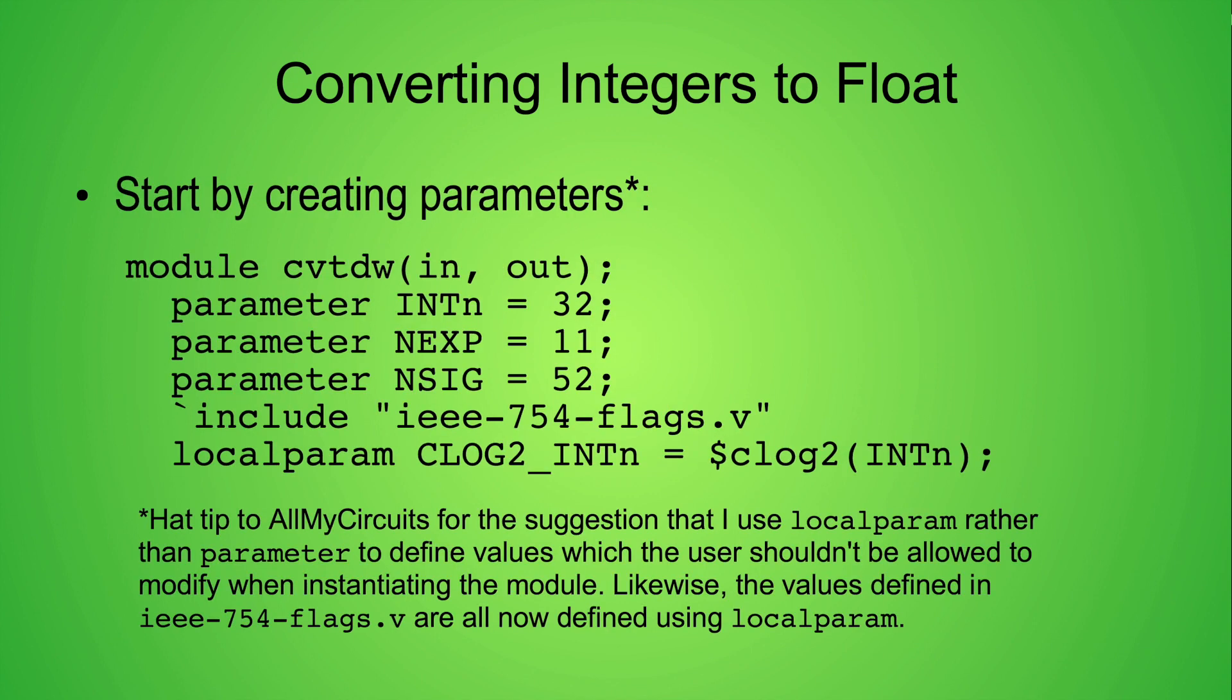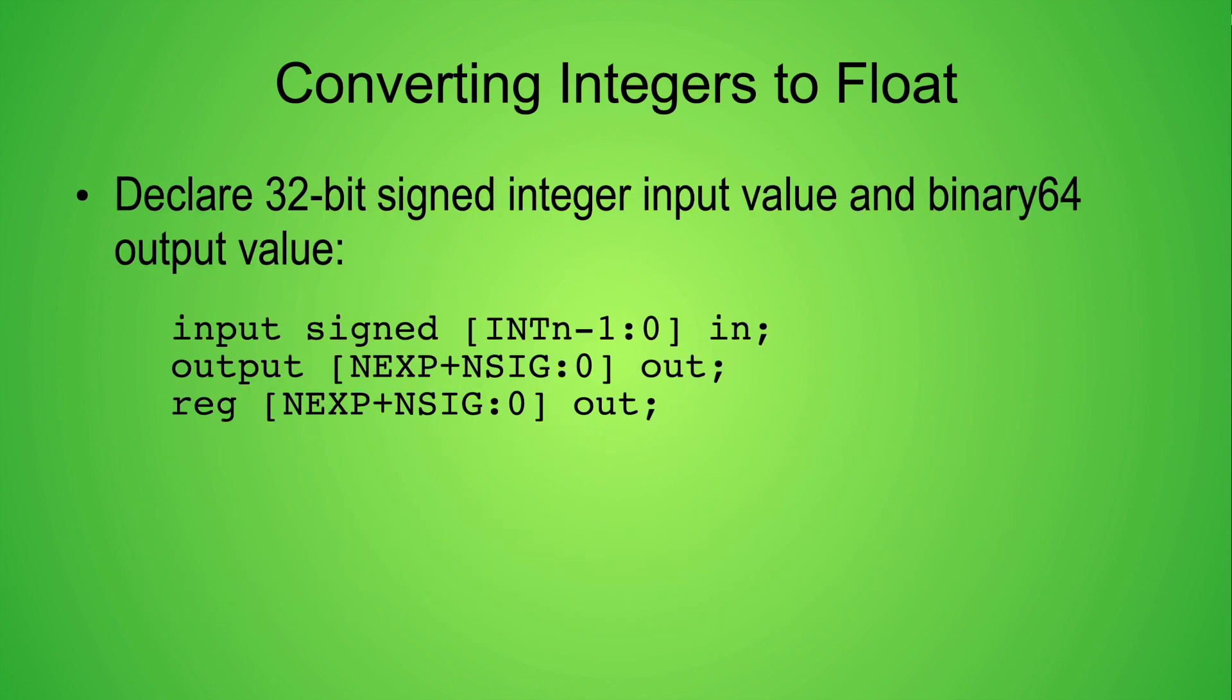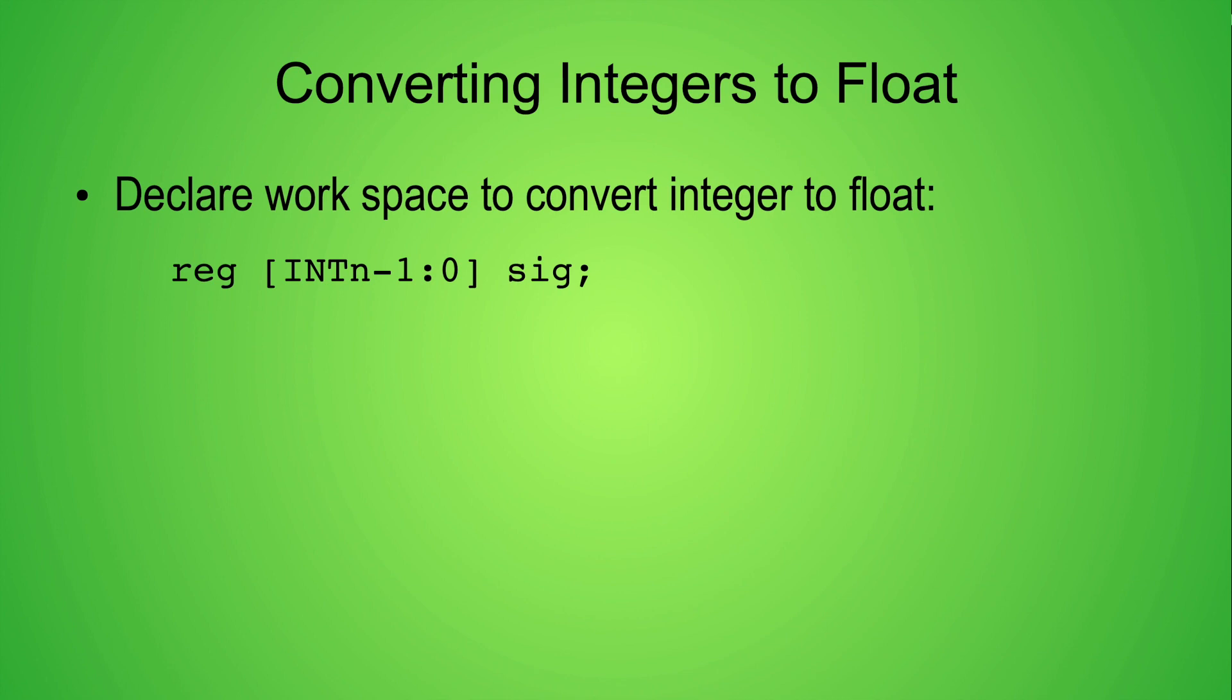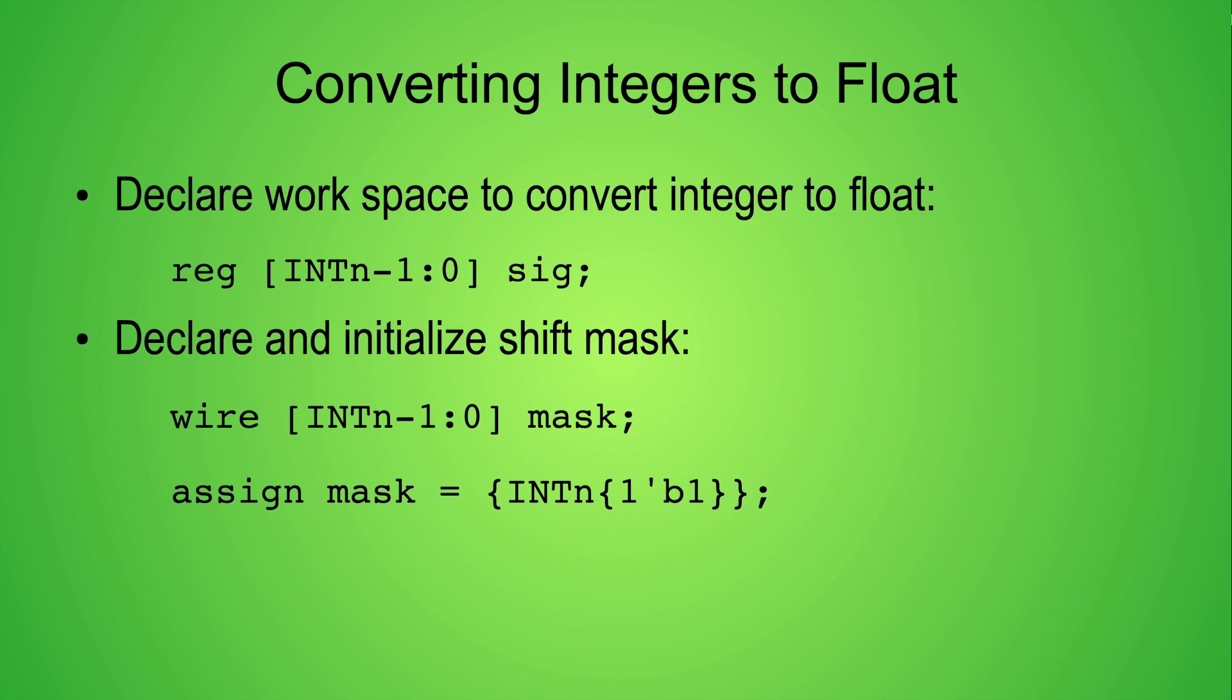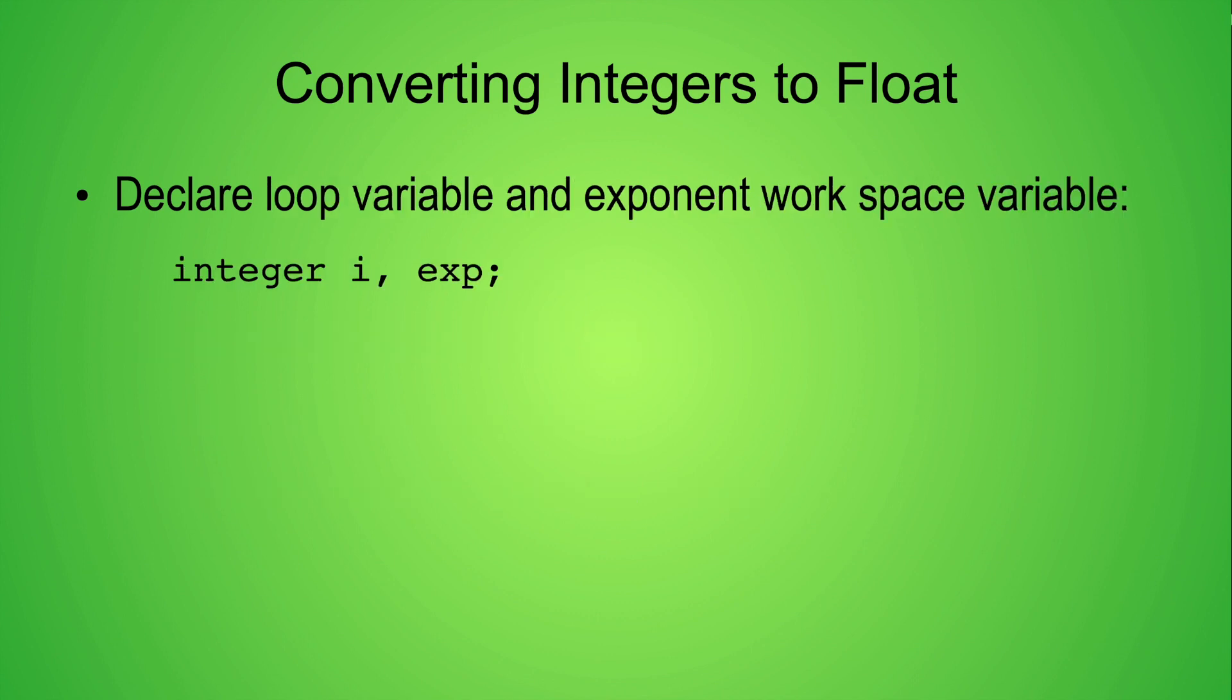This module has one input, a 32-bit signed integer, and one output, the binary64 version of the integer input value. Here you can see that I use parameters to specify the size of the integer input value and the size of the subfields of the binary64 output. And here I use those parameters to declare the actual input-output arguments. The SIG register value is my working space where I process the integer input to create the significand value. And the mask value is used to examine the leading bits of the current SIG value. The value i is the iteration variable for the loop which follows. The EXP value keeps track of how many bits the SIG field was shifted to the left.